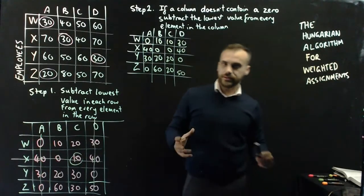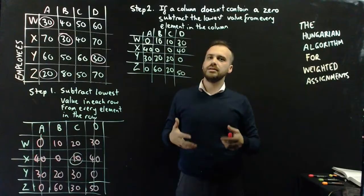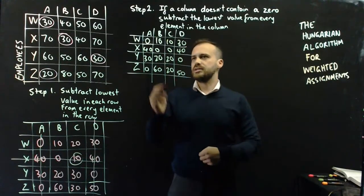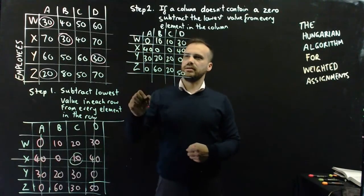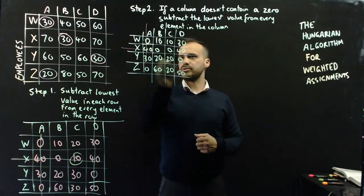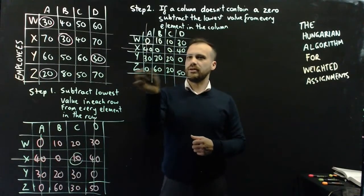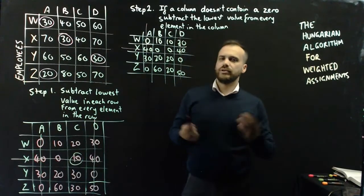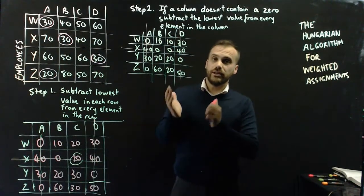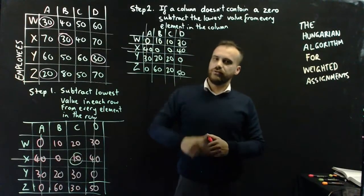Now we again cover all the zeros with the minimum number of lines. I see two zeros here and two zeros there — I cover those two groups with a line each. That's two lines so far, and I cover the remaining zero with one more line. Three lines again. Because it's still only three lines and I need four assignments, I'm still not finished.